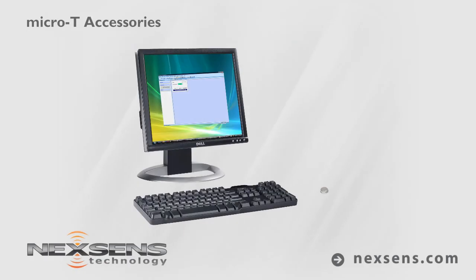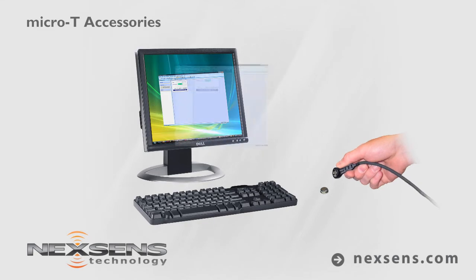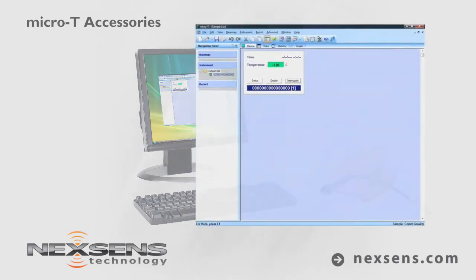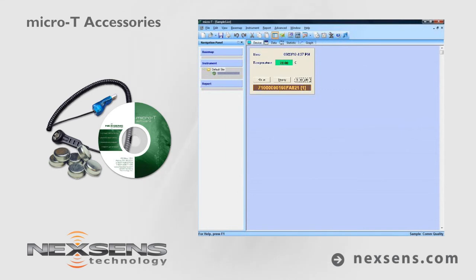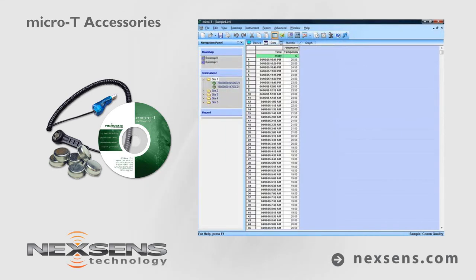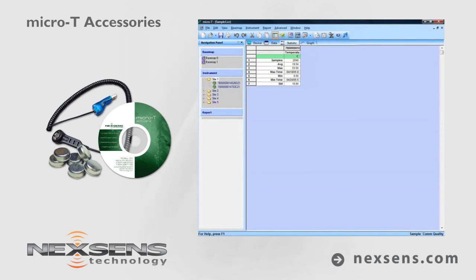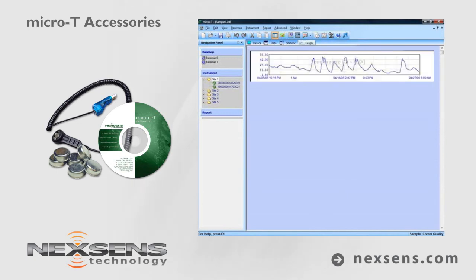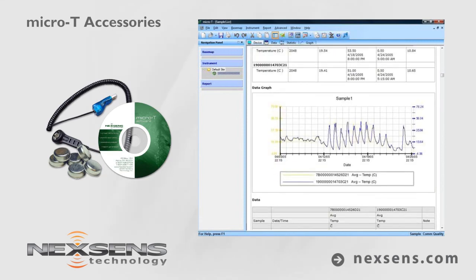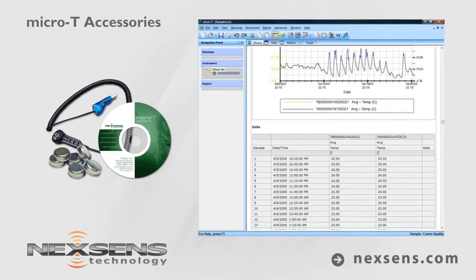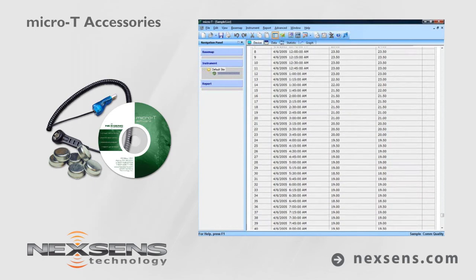After deployment, upload data by simply touching a logger to the USB reader and following the step-by-step instructions. The software interrogates and stores the data with each logger's associated unique ID. Switching to the data, statistic, and graph tabs will show the data in different formats. Automatic report generation allows you to monitor trends in historical temperature data.